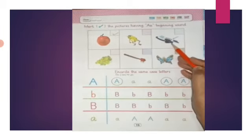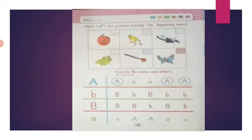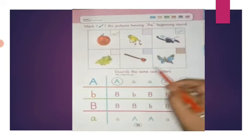Next picture. Aeroplane. Aeroplane's name, letter A. So we will tick this box. We will tick this box. Next picture.